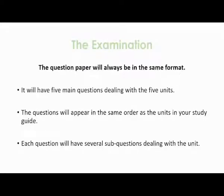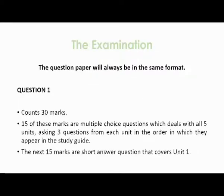The question paper will always be in the same format. It will contain five main questions dealing with the five main units. The questions will appear in the same order on the exam as in the units of your study guide, and each question will have several sub-questions dealing with the unit. Question 1 counts 30 marks. Fifteen of these marks are multiple choice questions dealing with all five units — that is three questions from each unit in order: the basic introduction to the arts, then music, then dance, then drama, then performance.